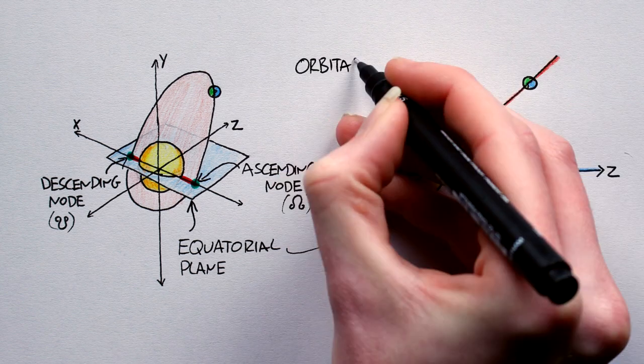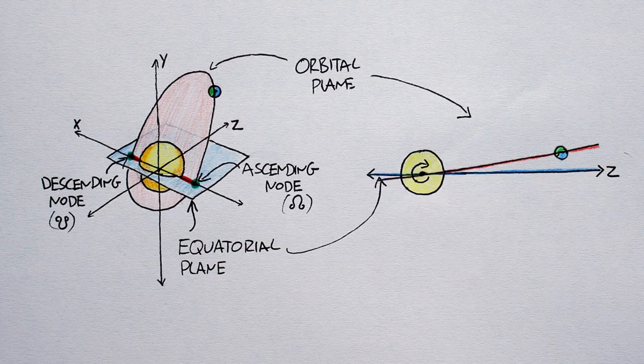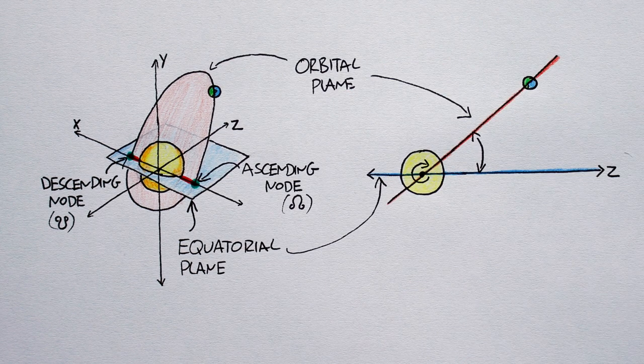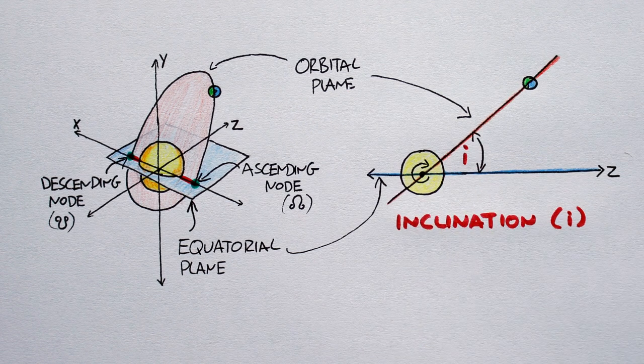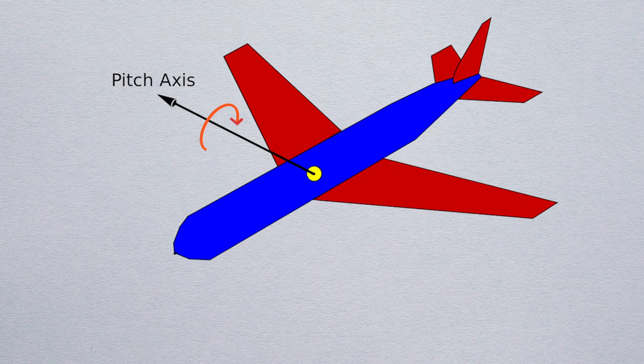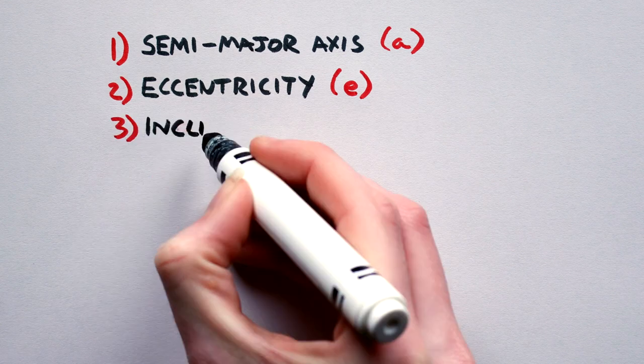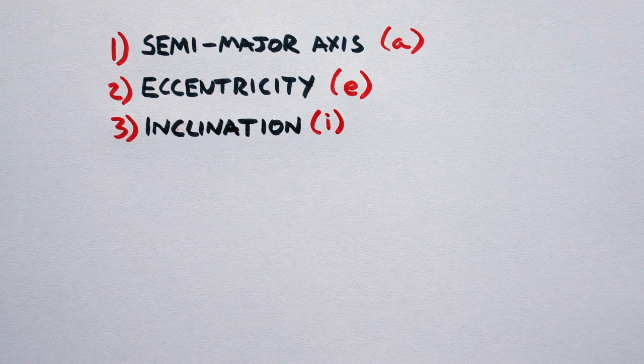Seen edge on, we can pitch the orbit about the x-axis like so. The degree of pitch is known as I, the inclination. Values range from zero to 180 degrees, so just as a pilot can alter the pitch of his plane, so too we can alter the inclination of our orbit. Orbital parameter number three, know thy orbital inclination.